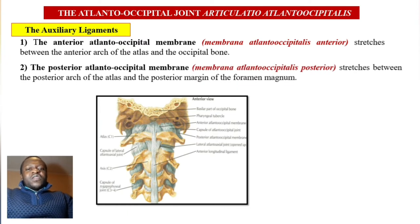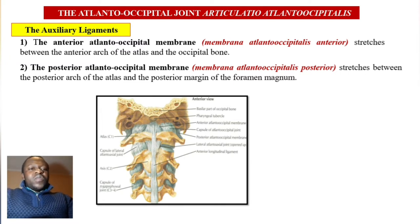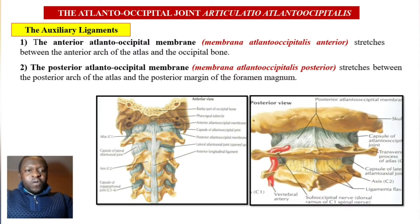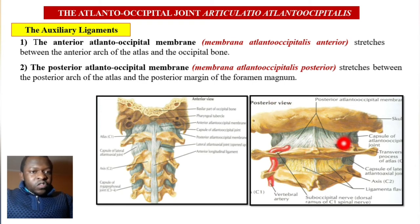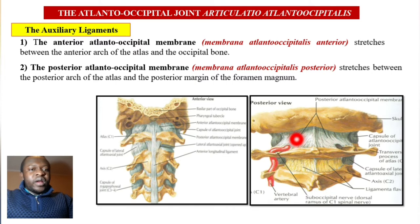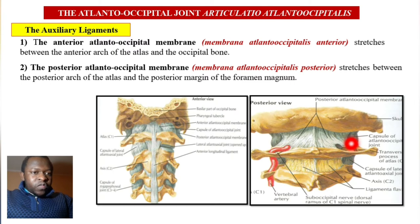On the posterior side there is a posterior atlantooccipital membrane, membrana atlantooccipitalis posterior. This membrane stretches between the posterior arch of the atlas and the posterior margin of the foramen magnum. In this posterior view you can see this membrane, the membrana atlantooccipitalis posterior, and on the sides the capsules of the atlantooccipital joints.